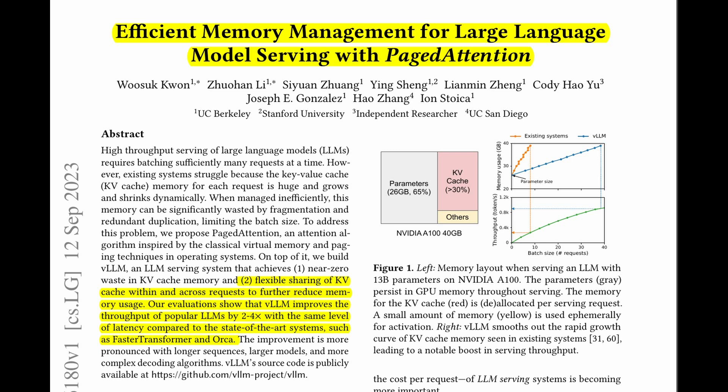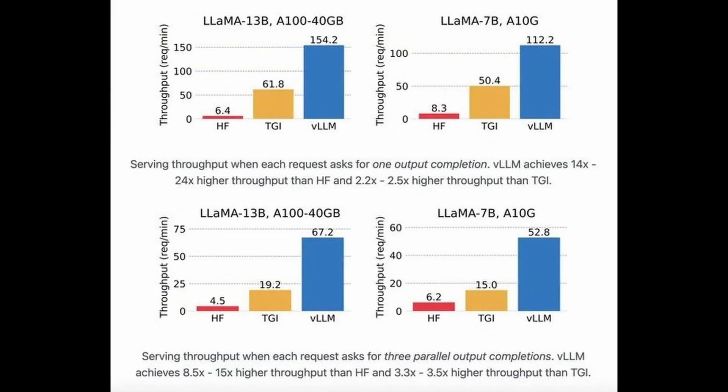Beyond paged attention, VLLM is also famous for high throughput, which measures the number of output tokens the server generates per second for all users and queries. VLLM can achieve up to 3.5 times higher throughput than the previous state-of-the-art TGI, that is Hugging Face Text Generation Inference.